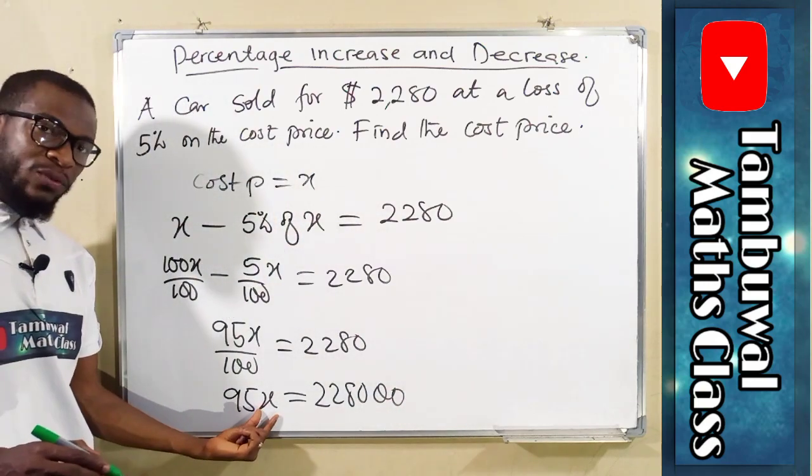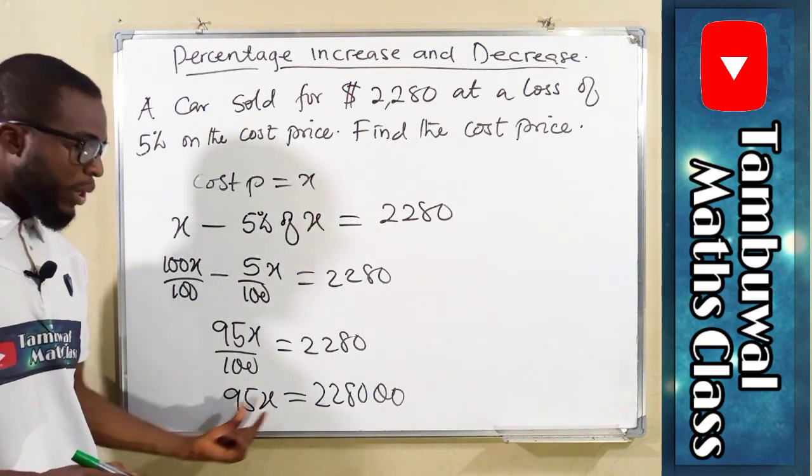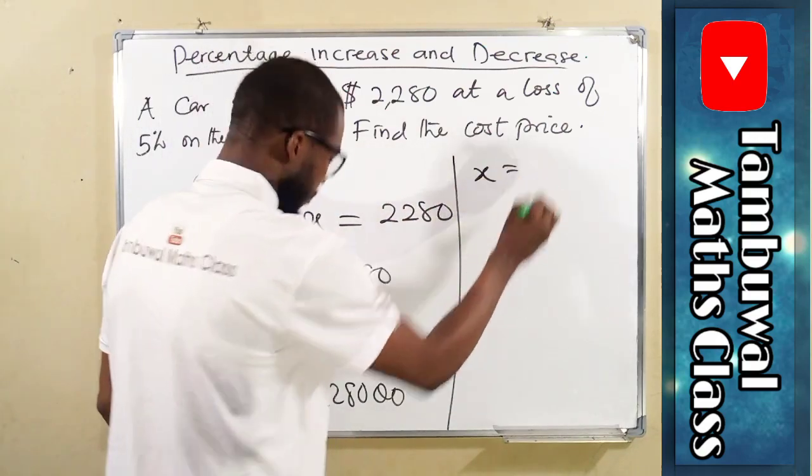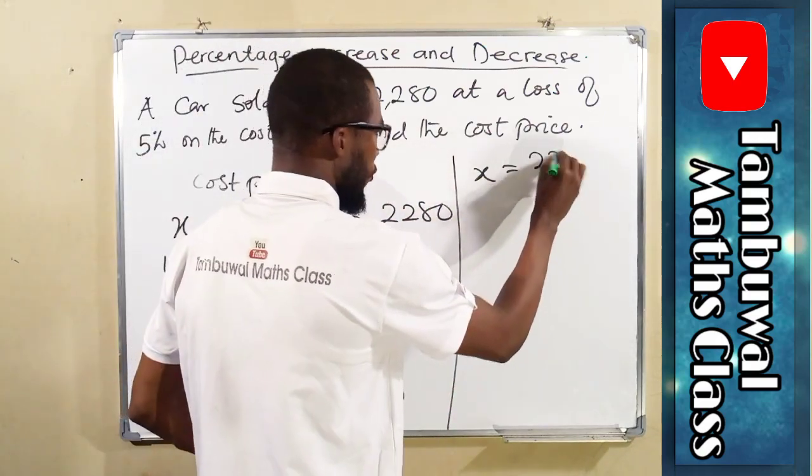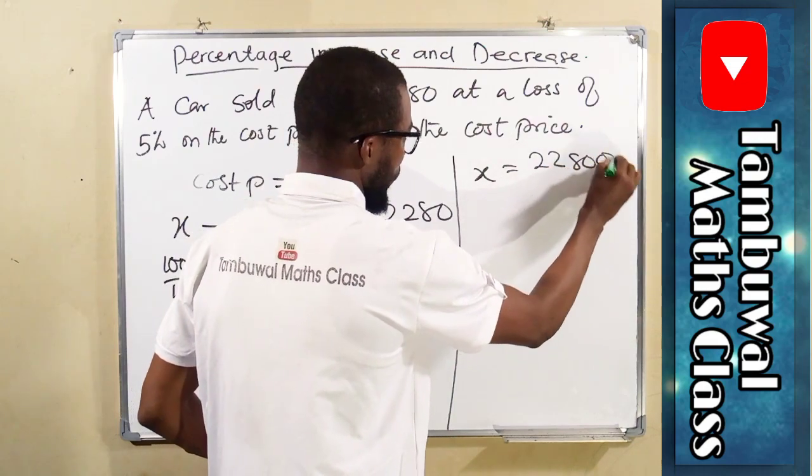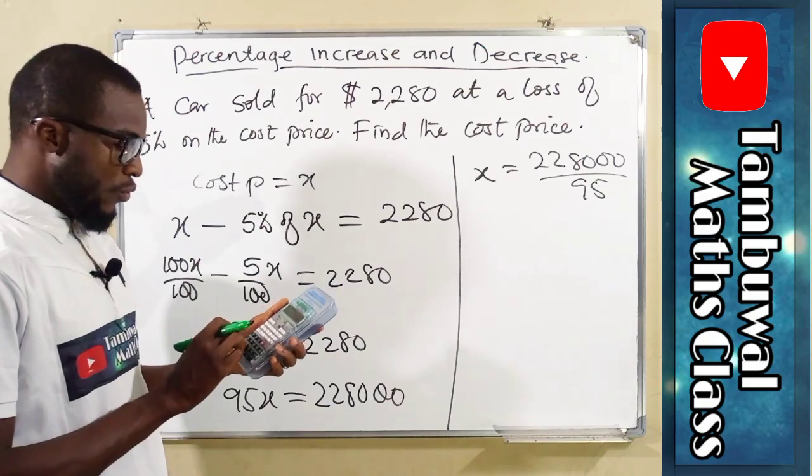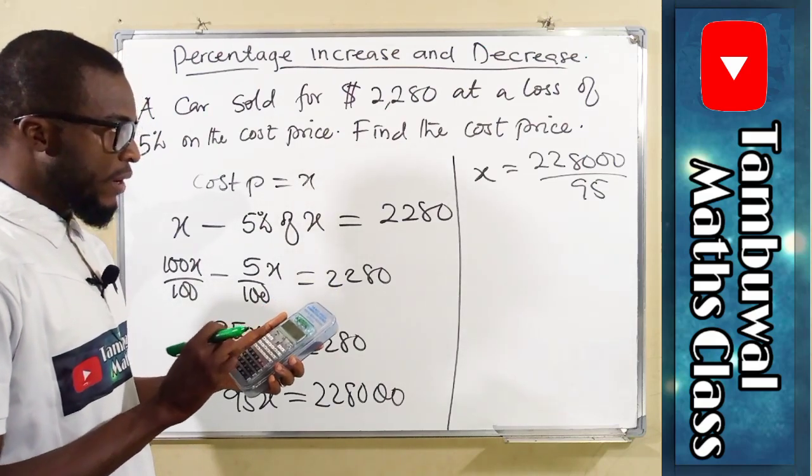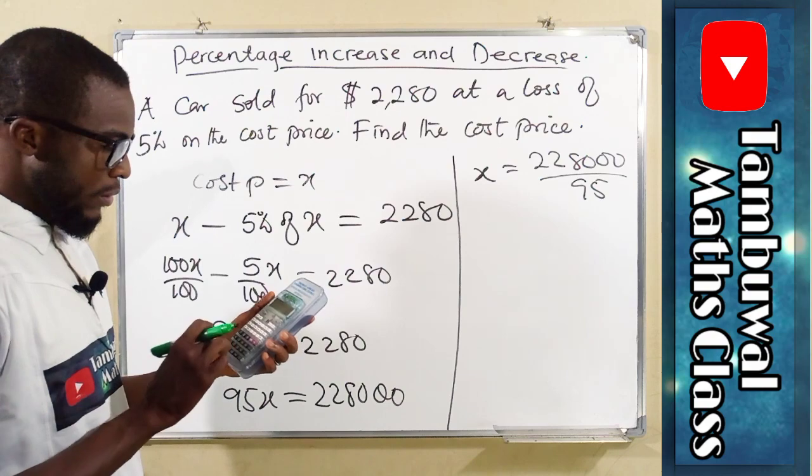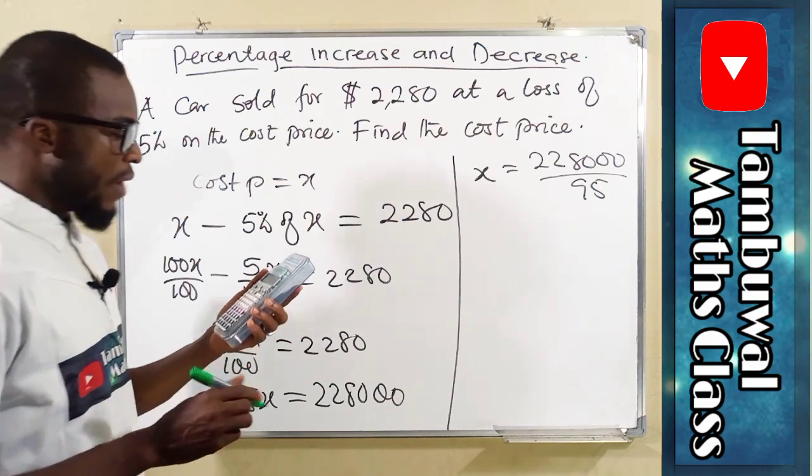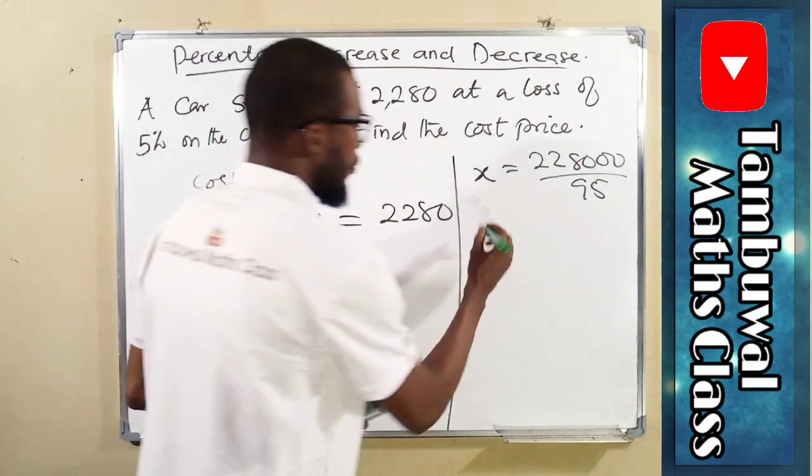To find the value of x, which is the cost price, we divide both sides by 95. Therefore, x equals 228,000 divided by 95, which gives us $2,400.